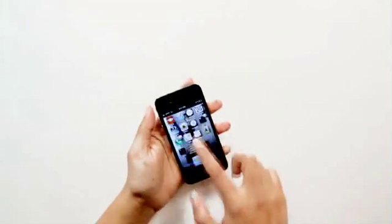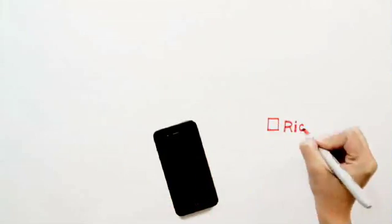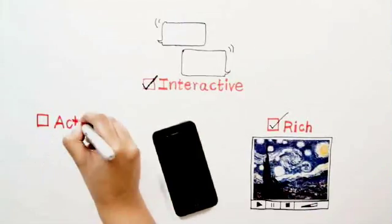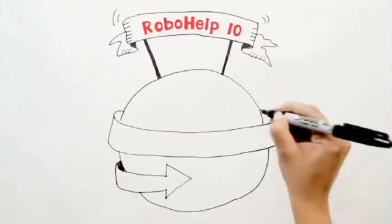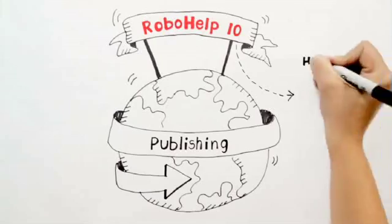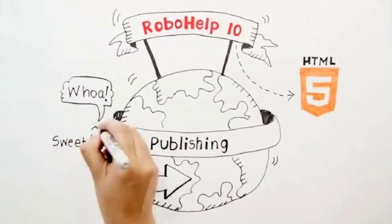The millennial generation will not sift or scroll through pages of information. They'll want help content at the tip of their fingers. Content that is rich, interactive, and immediately actionable. Adobe RoboHelp 10 revolutionizes the world of publishing with the new multi-screen HTML5 output capabilities.